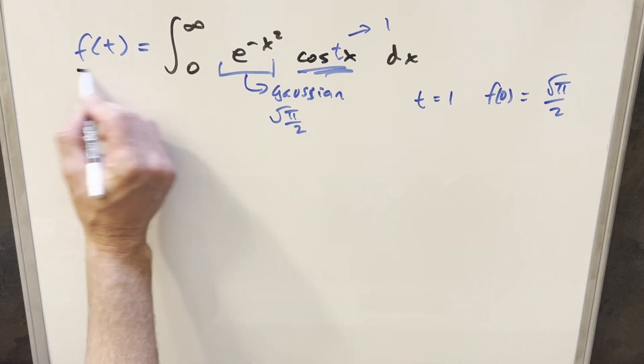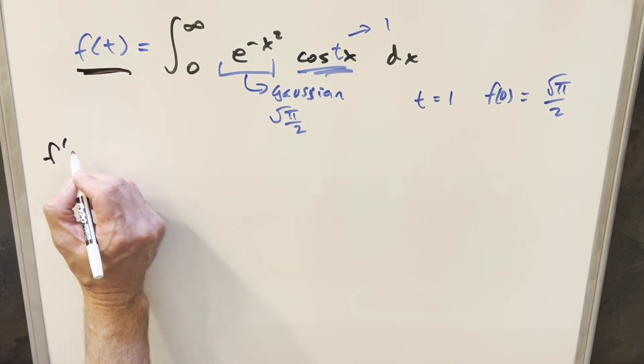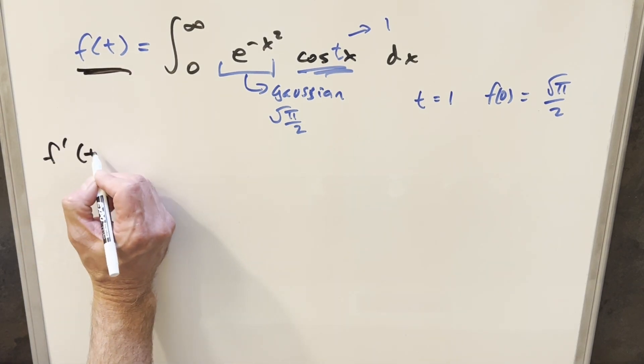Continuing from here, we want to take a derivative of our function and find f prime of t. We take the derivative on the right side with respect to t. That's where we use Feynman's trick: we differentiate inside the integral, writing it as a partial derivative with respect to t. The e to the minus x squared piece is entirely in terms of x, so it's a constant with respect to t and comes out front. Then the derivative of cosine tx is minus sine tx, and by the chain rule the derivative of tx with respect to t is just x. We'll move the minus sign with the x.